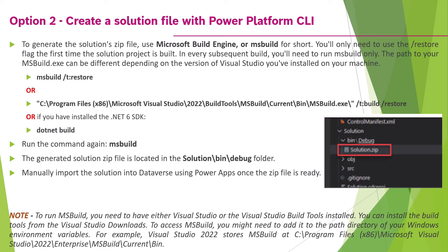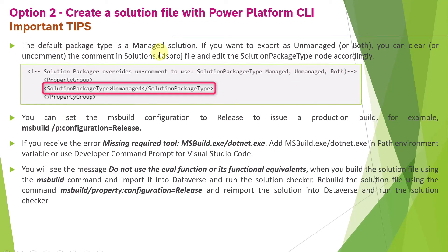To summarize the two approaches: for development and testing, use the pac pcf push command directly without creating a zip file. For deploying to other environments, create the solution zip file and import it. An important tip: the default generated solution.zip is a managed solution. If you want to import it as unmanaged, open the solution.cdsproj file and change the SolutionPackageType node value from 'managed' to 'unmanaged' or 'both.'